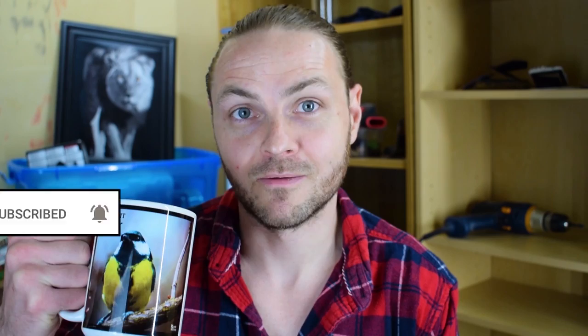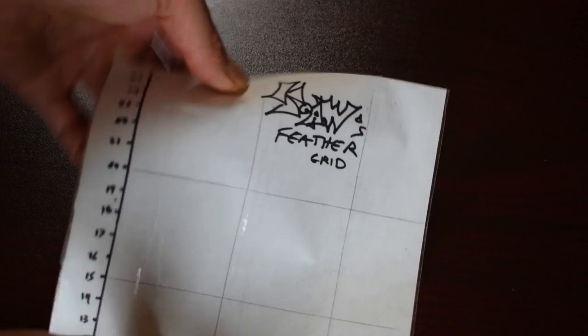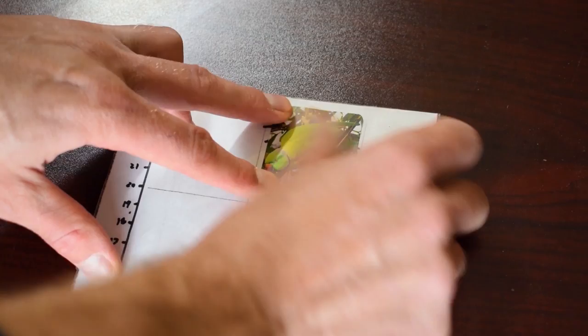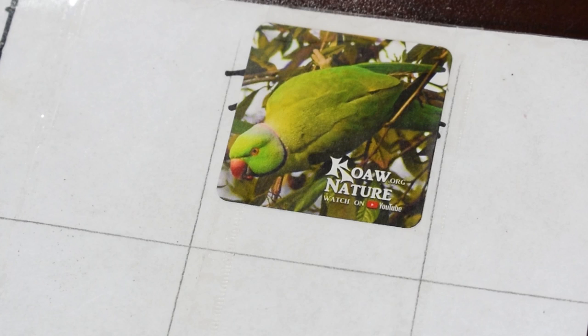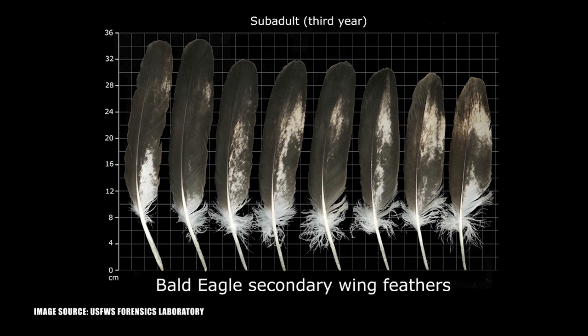I've also laminated mine with some packaging tape, because if you are like me in the field you're often getting wet and dirty, and it's probably greener to make a sturdy one rather than many more over time. Keep in mind that some feathers do get quite large — like a female bald eagle has a feather reaching around 36 centimeters — so you may want to make a taller attachment for your chart.